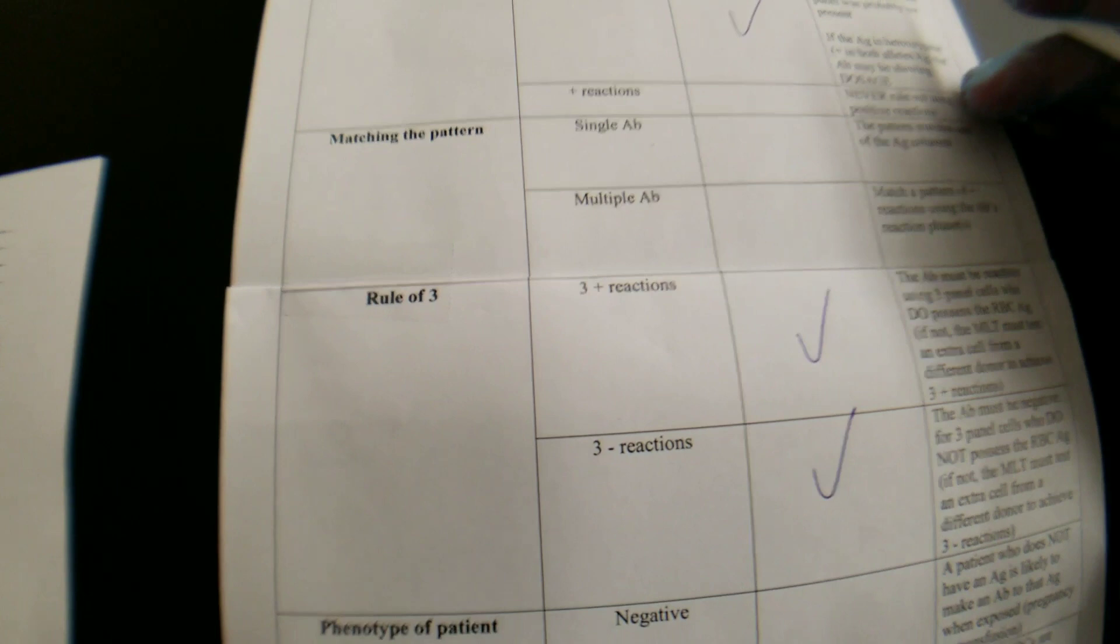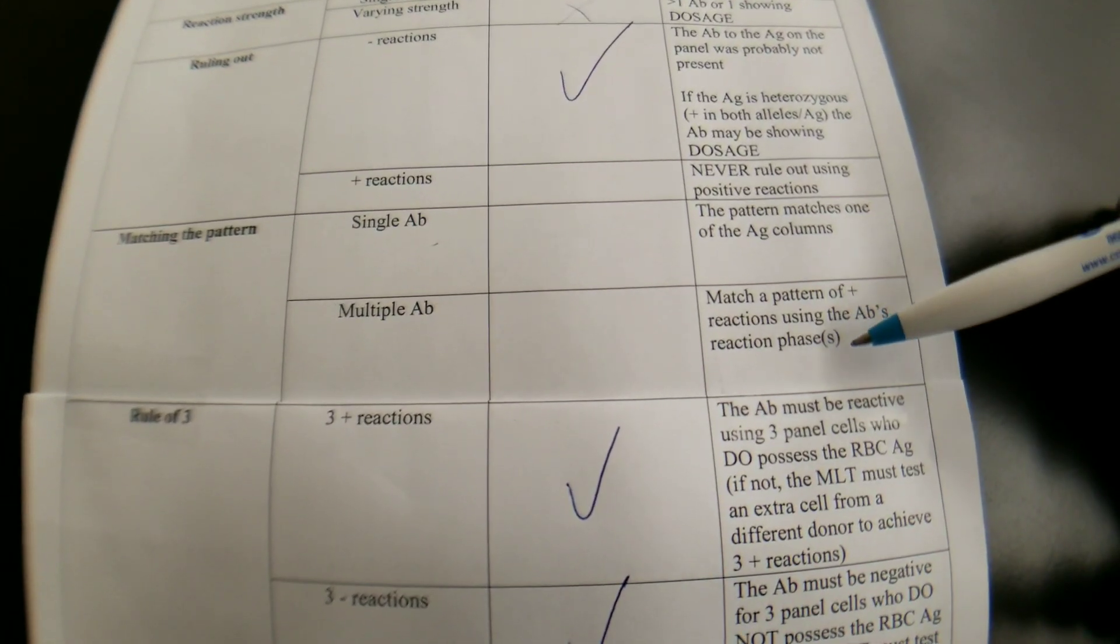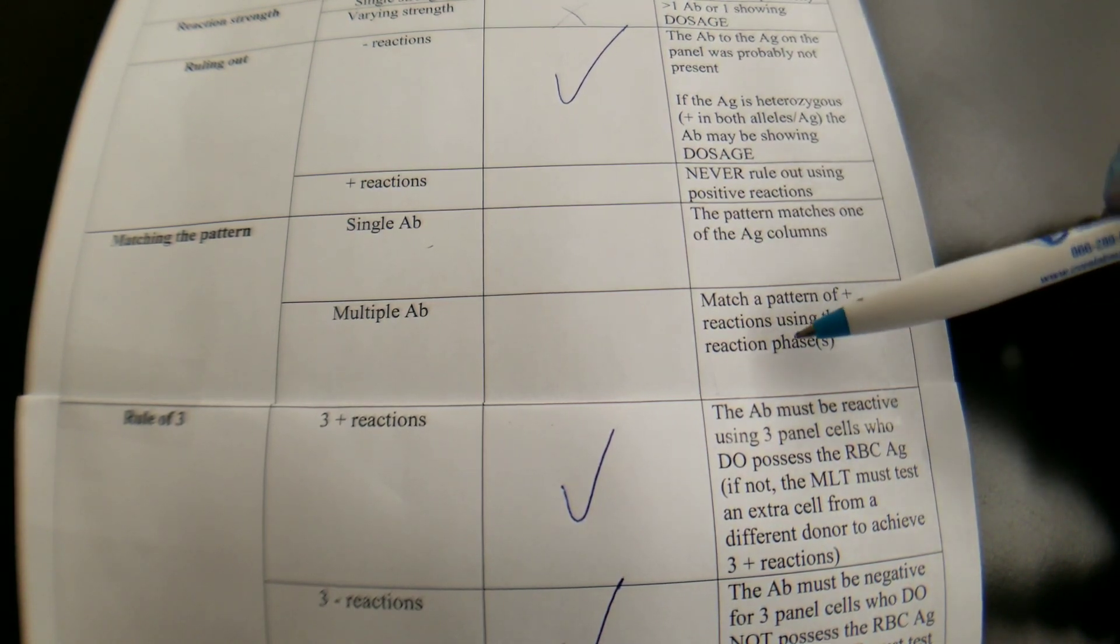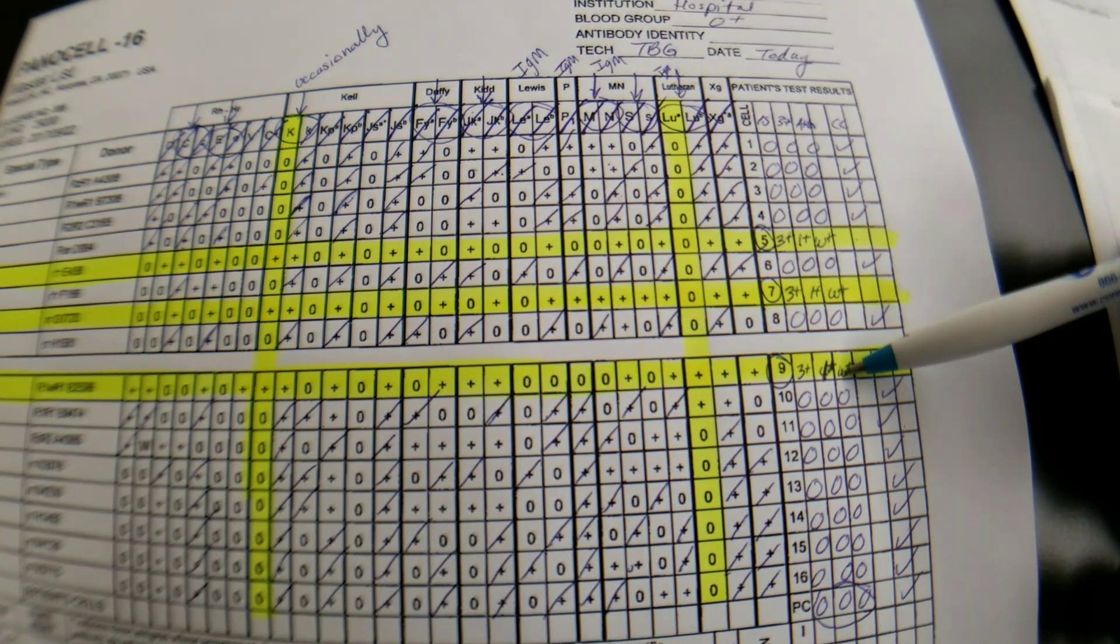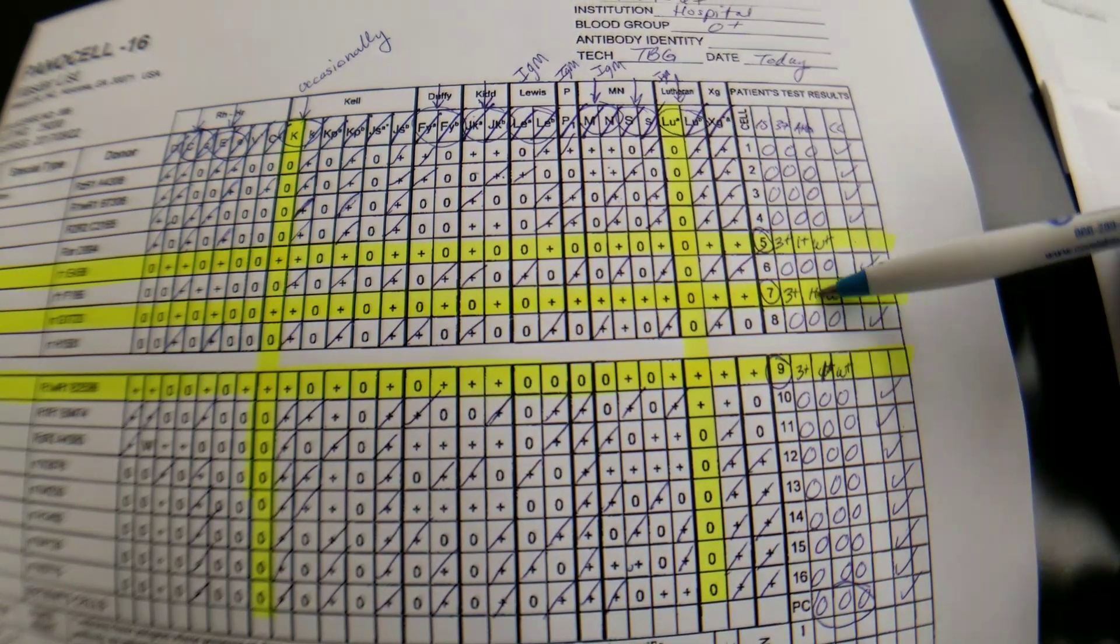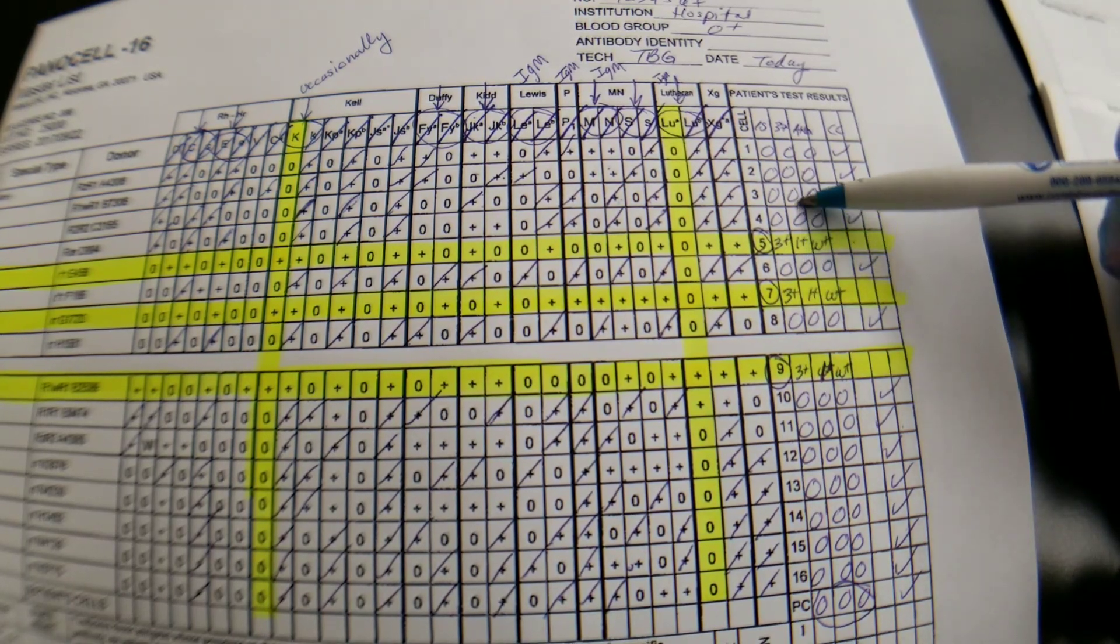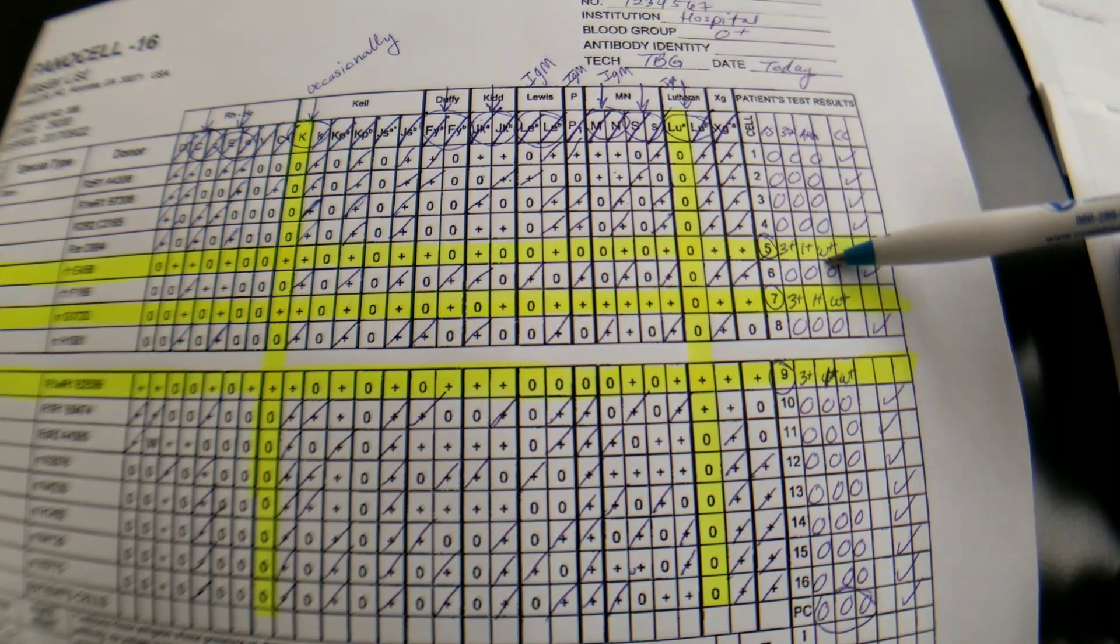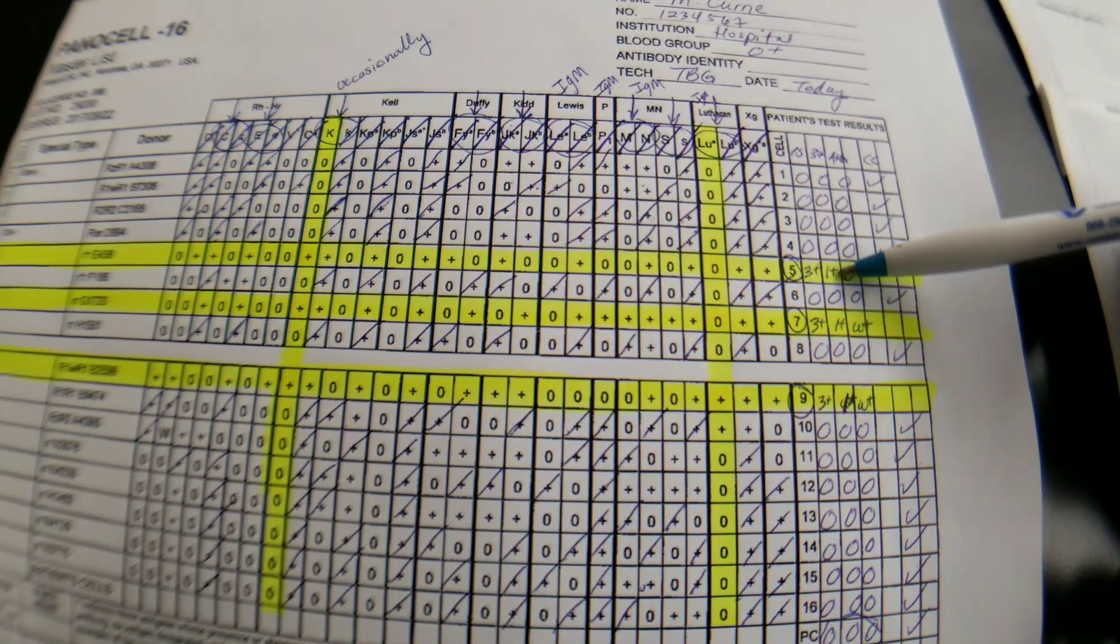Okay, let's do the pattern now. All right, with the pattern, it says single antibody. The pattern matches one, or a multiple antibody. You match a pattern of positive reactions using the antibodies' reaction phases. Okay, we said that we think we have one antibody because they all look the same. And I'm going to stick with that. Okay, when you have varying reaction phases, it would mean that maybe you have fours and threes in here, threes and ones in here. Okay, so you would have different reaction strengths that don't all match one exact pattern like these do. So I keep saying pattern, but you know, reaction phase pattern.